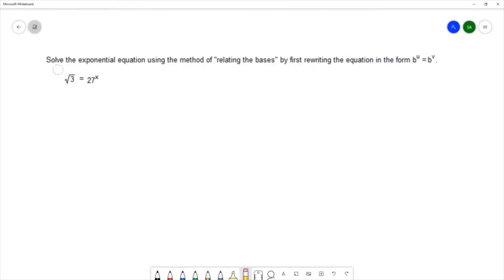In this question we want to solve the exponential equation using the method of relating the bases by first rewriting the equation in the form b to the u equals b to the v. The equation is the square root of 3 equals 27 to the x, so the directions have specified what method we're going to use here.